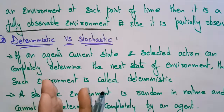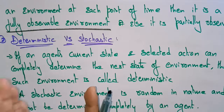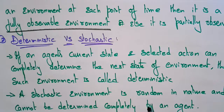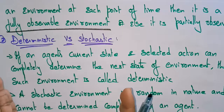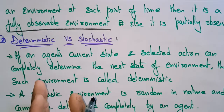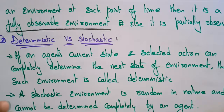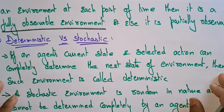Suppose if you take any automatic self-driving car — that is an agent. This agent is fully observing the environment, meaning whatever the maps, signals, or sensors, everything is active and it is able to observe everything surrounding that car. That is a fully observable agent. If an agent's sensor cannot sense the complete state at each point of time, then it is partially observable.